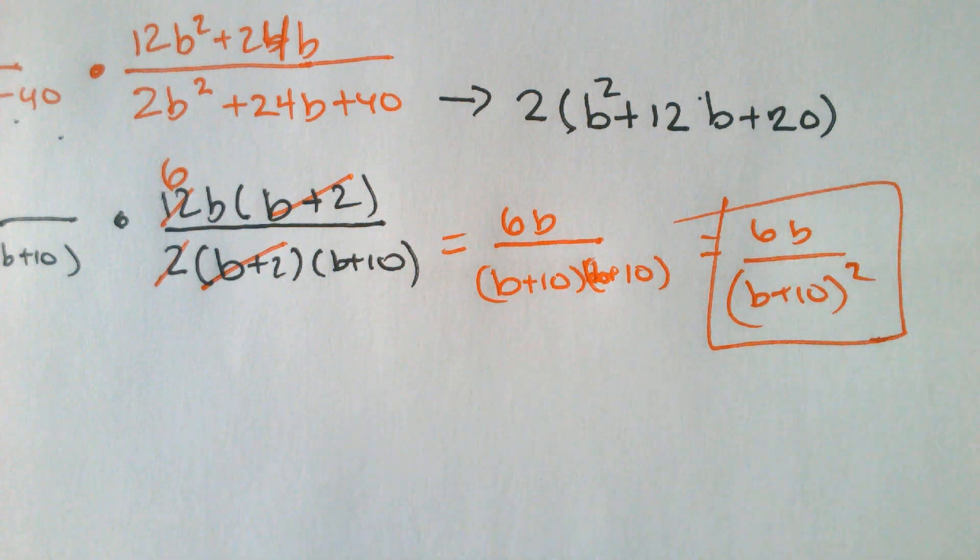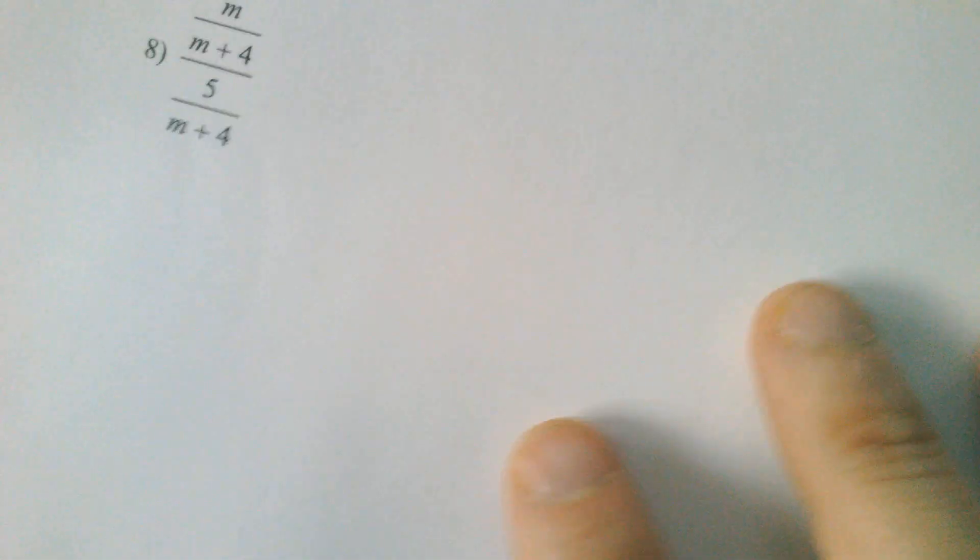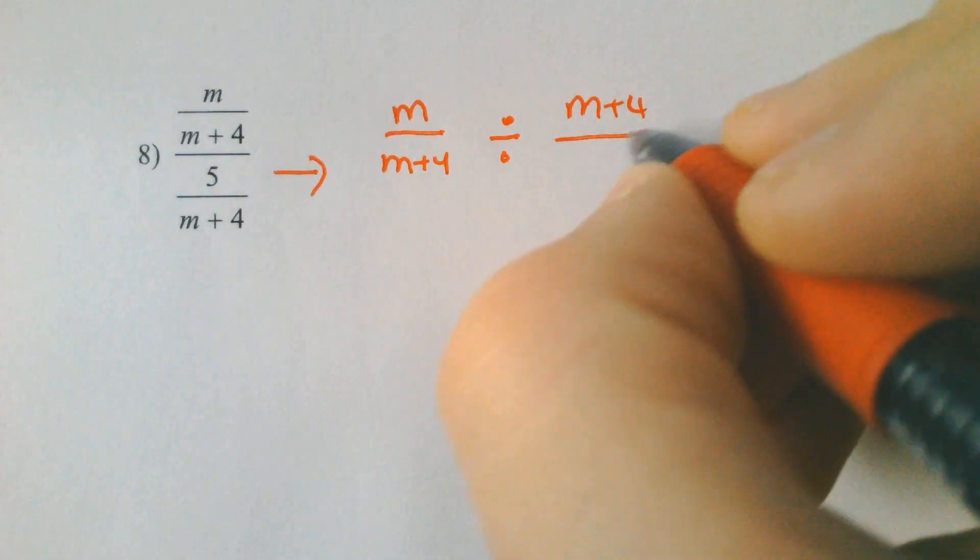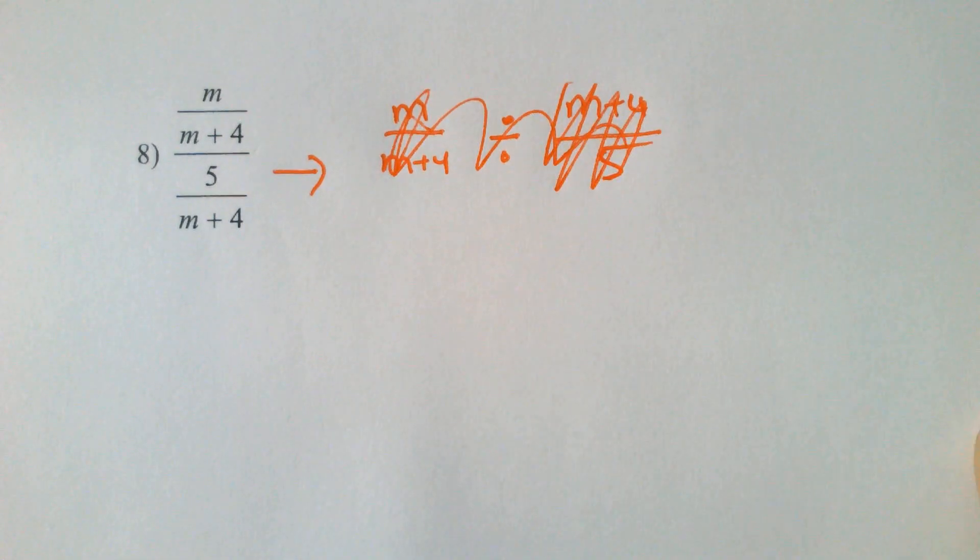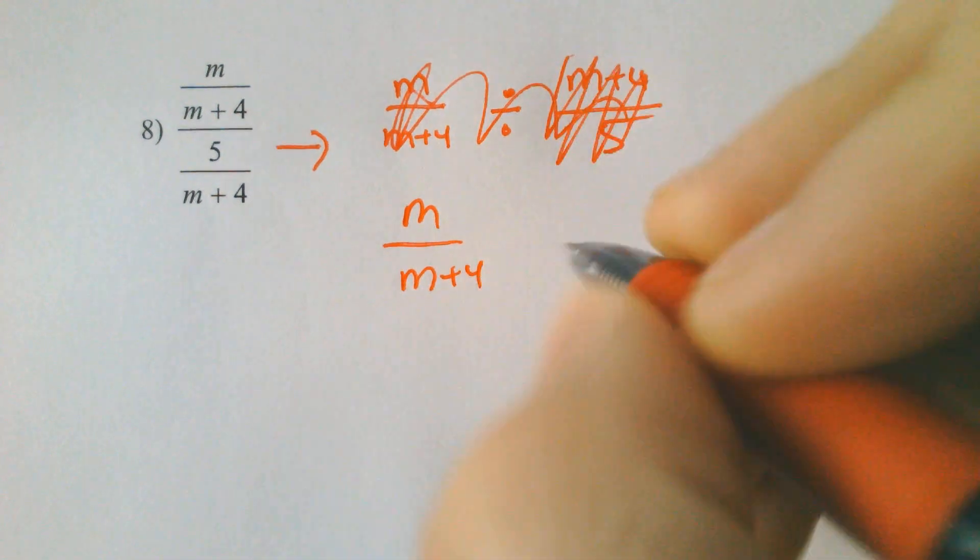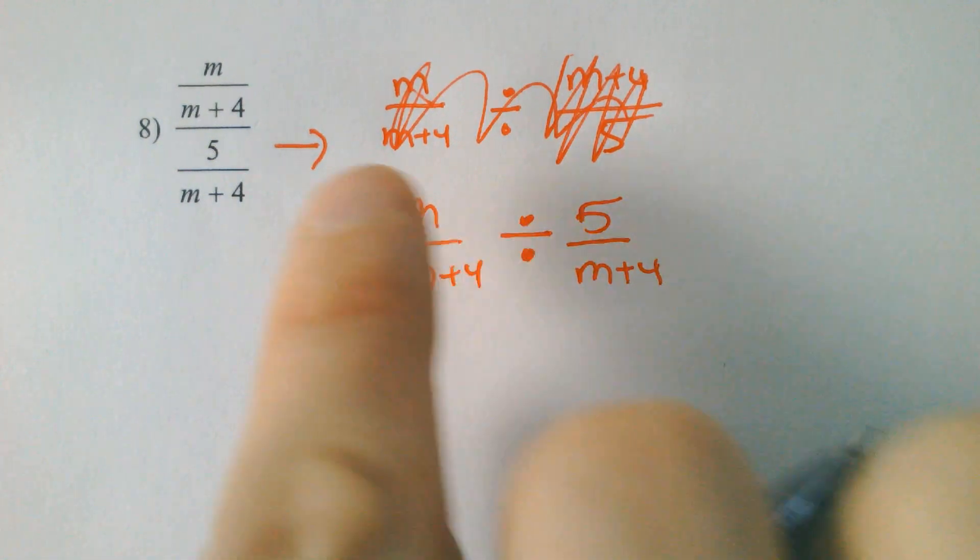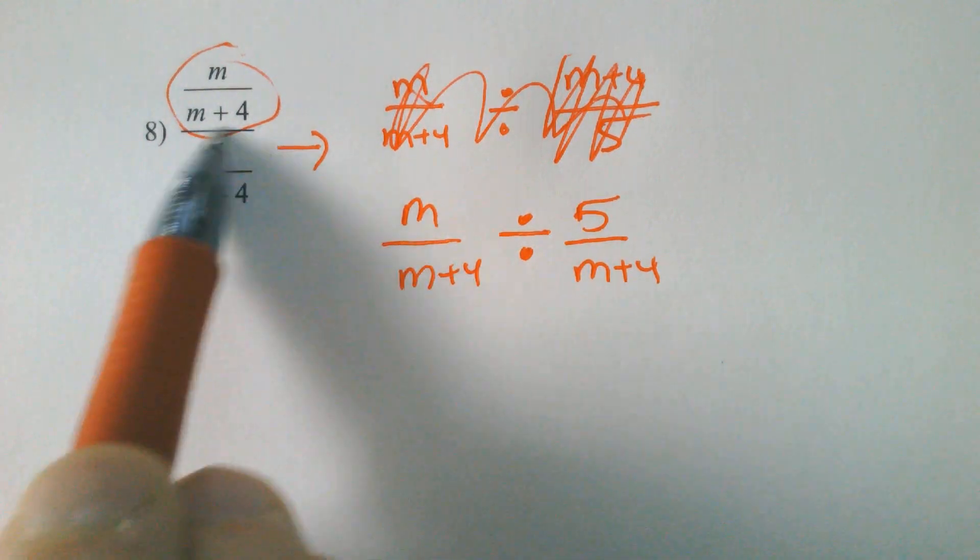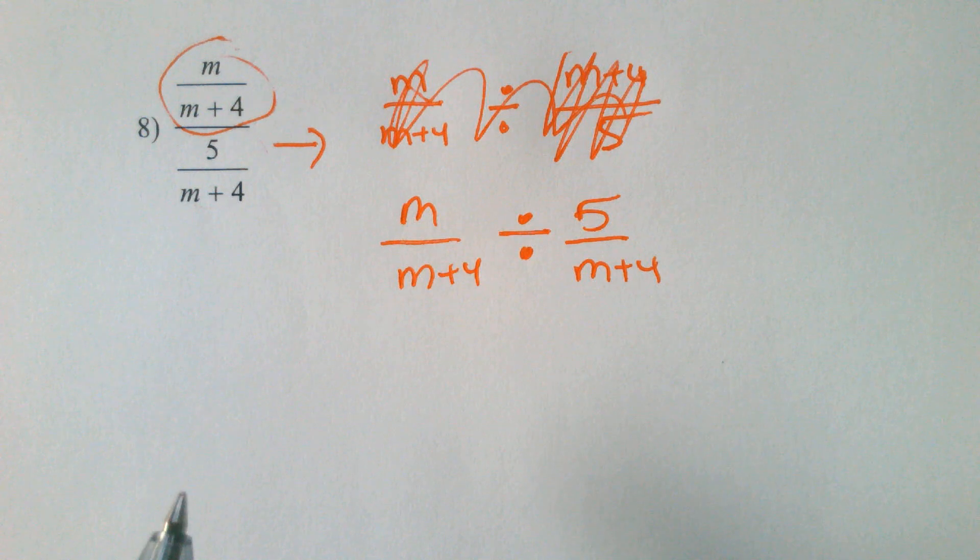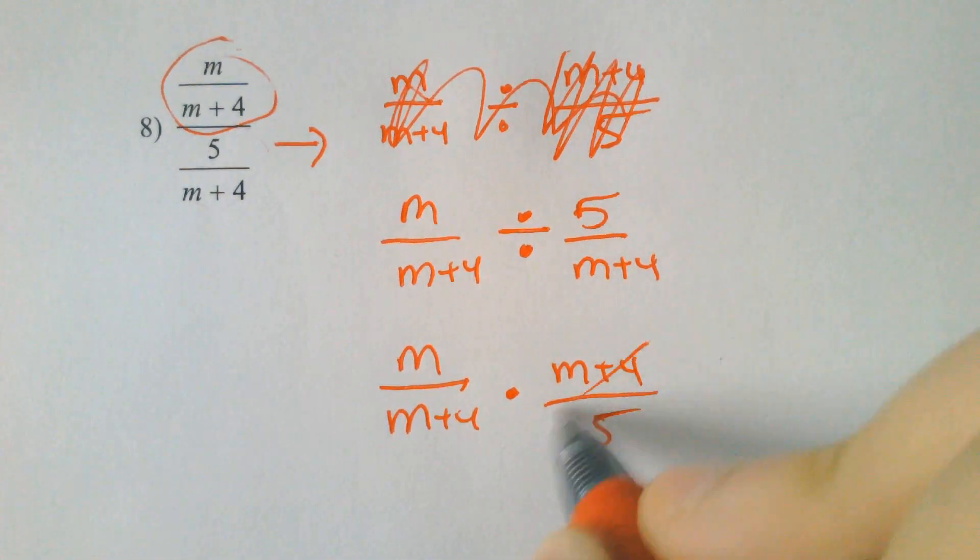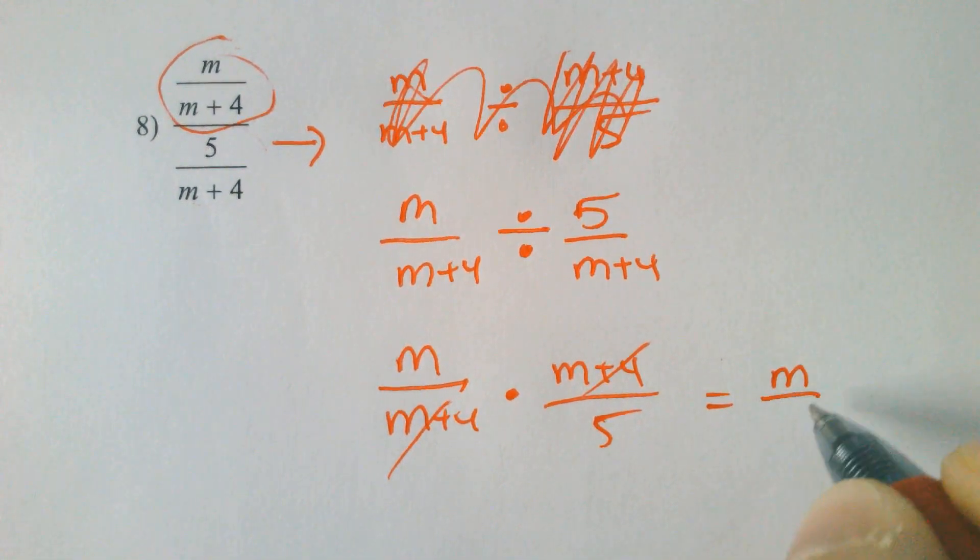Got another division problem, probably two more division problems just because they look scary, but they're not. This first one looks scary, doesn't it? We got M over M plus 4 and whoa. All you have to recognize is that this is really dividing by (M plus 4) over 5. M over M plus 4 is divided by 5 over M plus 4. So this fraction on the top, that fraction, is just divided by the bottom fraction. It's like one big, big, big fraction family here. So if you're dividing, you flip and multiply. So we got M, M plus 4 times the M plus 4 over 5. And then the M plus 4s cancel. So we're left with M over 5.